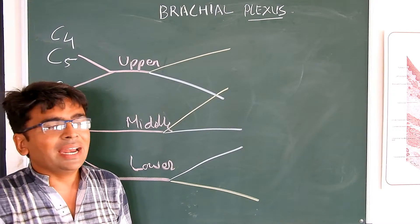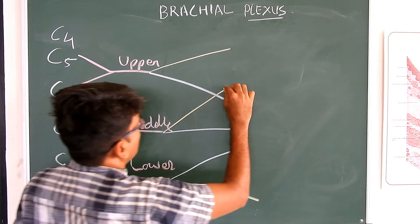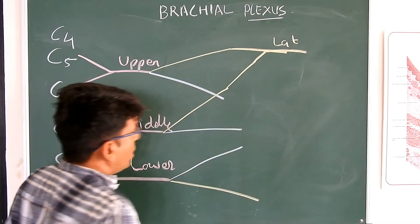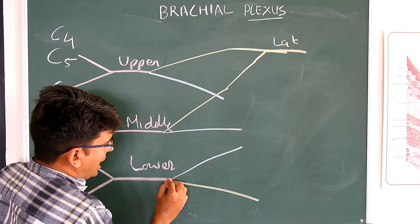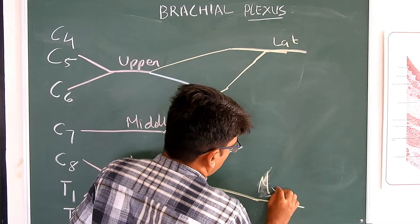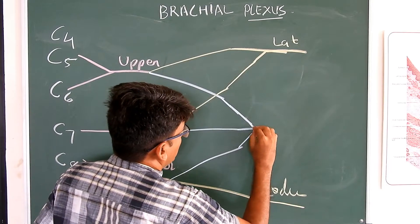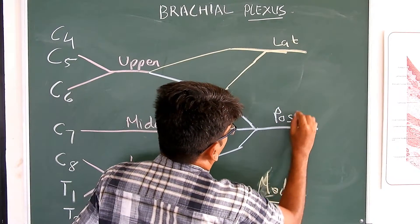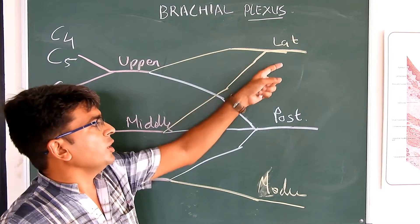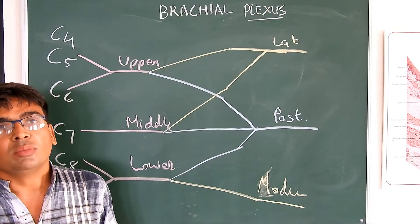There are three cords: medial, lateral, and posterior. The lateral cord is formed by the anterior division of the upper and middle trunks. The medial cord is formed by the anterior division of the lower trunk. All the posterior divisions combine to form the posterior cord. These cords are named according to their position around the second and third part of the axillary artery.